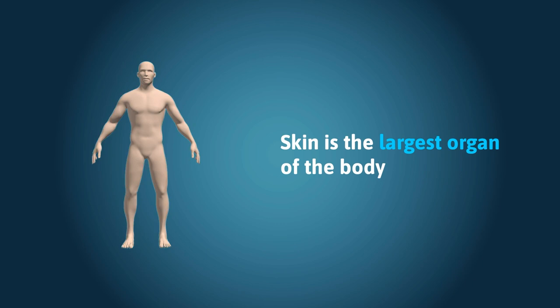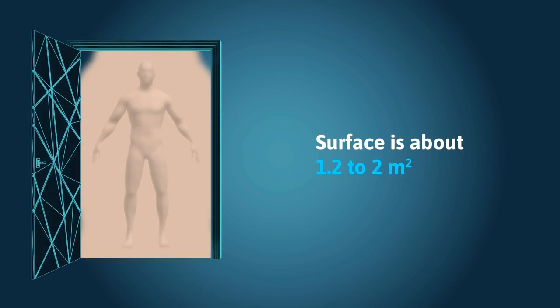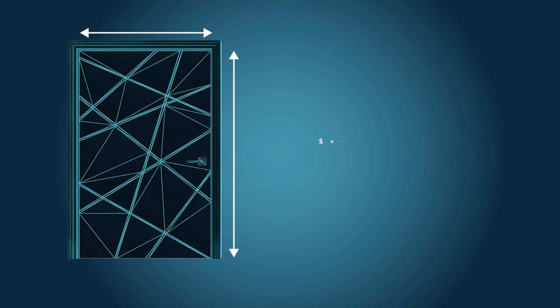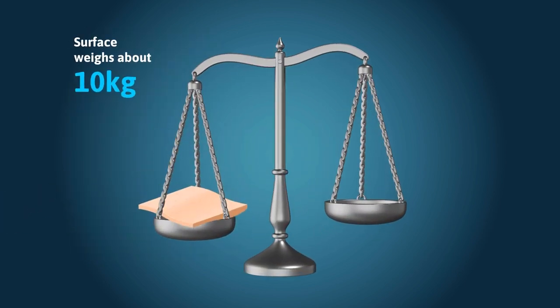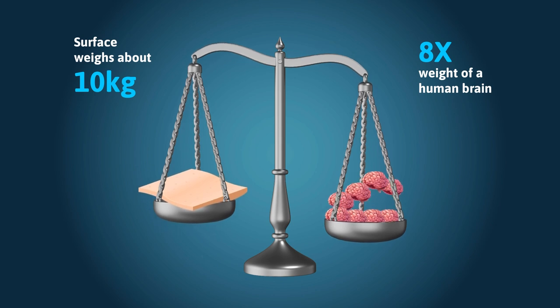Did you know that the skin is the largest organ of the body? Its surface is about 1.2 to 2 meters squared, which represents the surface of a standard European door, and weighs about 10 kilograms—that is around eight times the weight of a human brain.